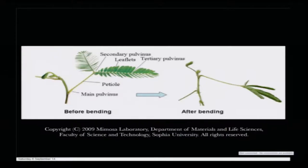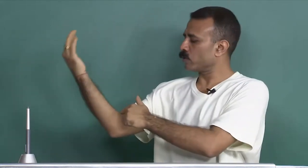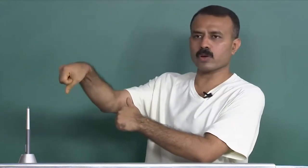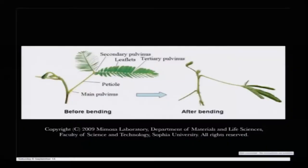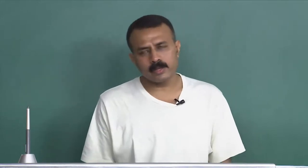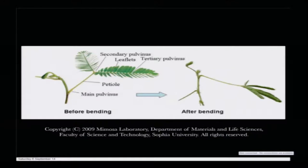Then you see the secondary pulvinus and something called a tertiary pulvinus. The reason I am stressing on the pulvinus is that these are the regions where the bending is taking place — just like zones at a joint where bending occurs. For the leaf: the tertiary pulvinus is at the tip where the leaf will curl, the secondary pulvinus provides the second level of bending, and the third is the main pulvinus. Comparing before-and-after photographs, you can see all three bendings have taken place — in the main, secondary, and tertiary pulvinus.